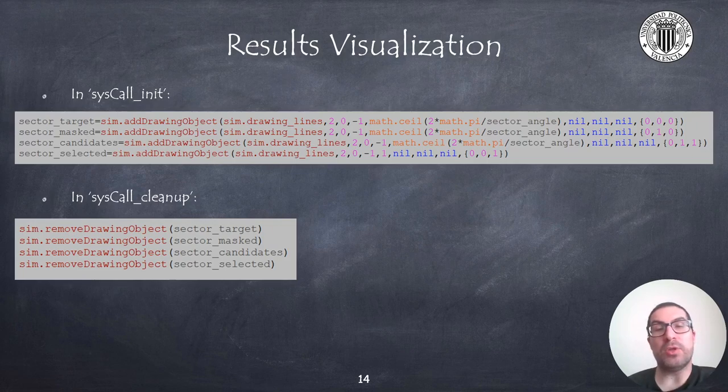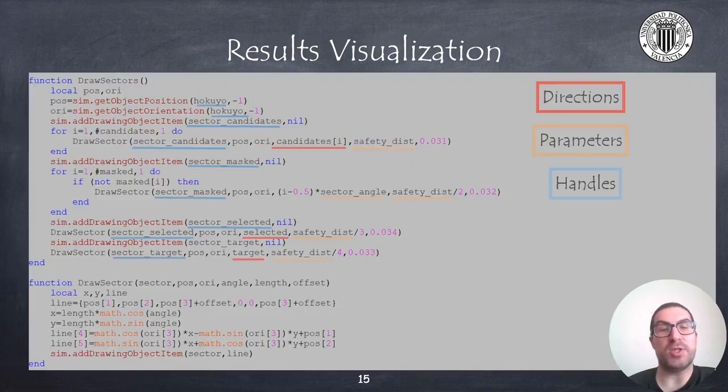Basically, if you copy this code, it will return the handles of objects to be drawn. And also, it is expected we remove these objects at the end of the simulation.